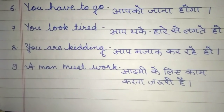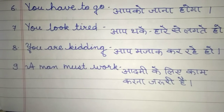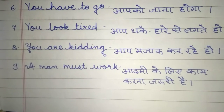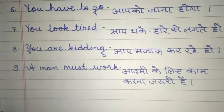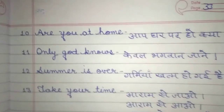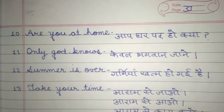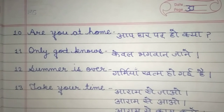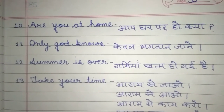Next is: 'You are kidding.' — You are kidding. In Hindi: Aap mazak kar rahe ho. Next is: 'A man must work.' — A man must work. In Hindi: Aadmi ke liye kaam karna zaroori hai. Next is: 'Are you at home?' — Are you at home? In Hindi: Aap ghar par ho kya?